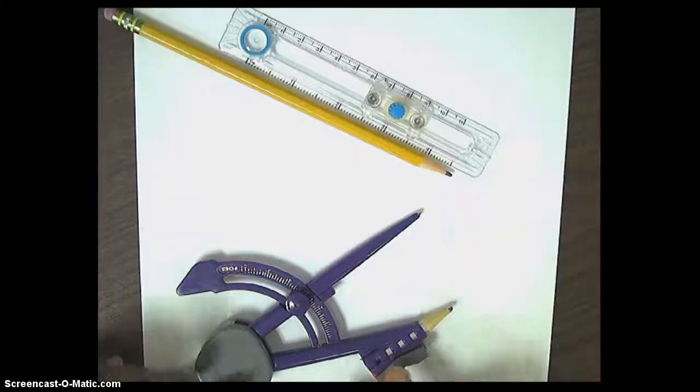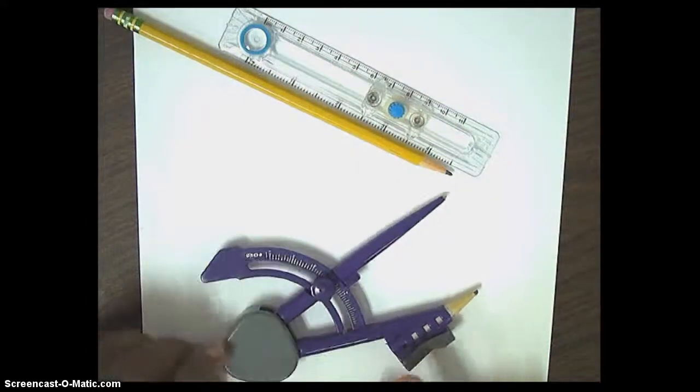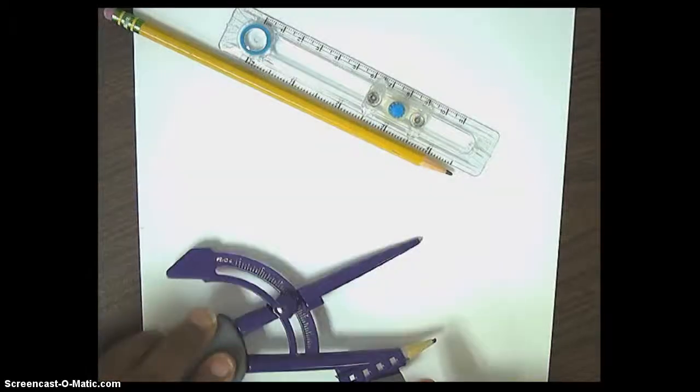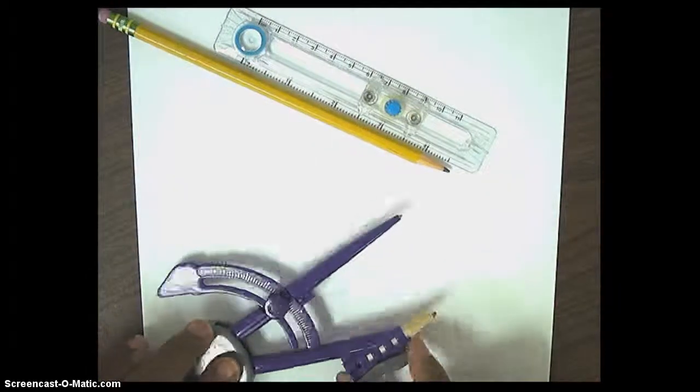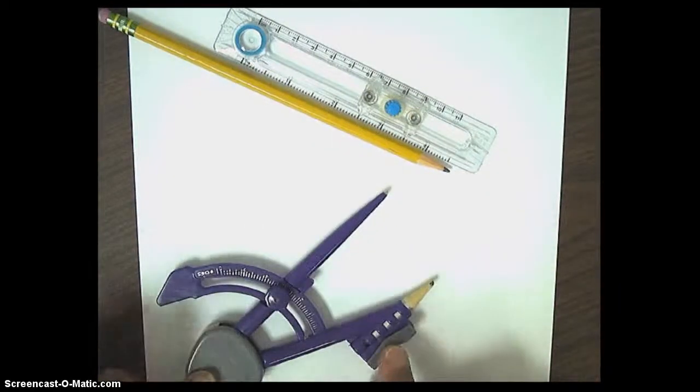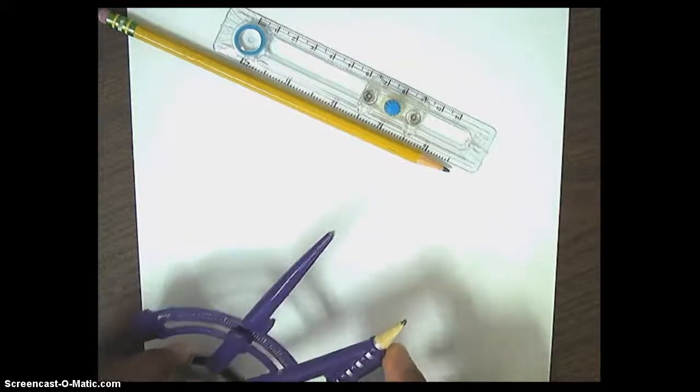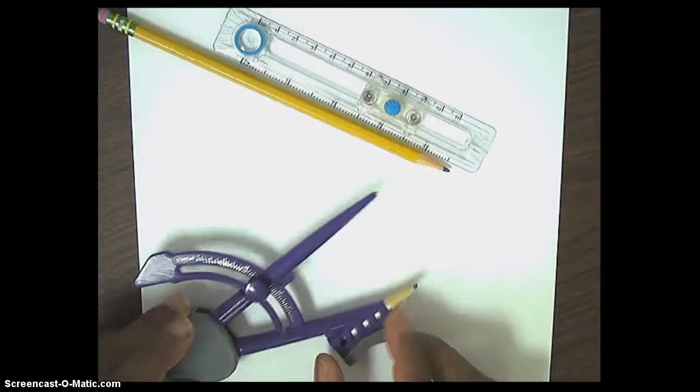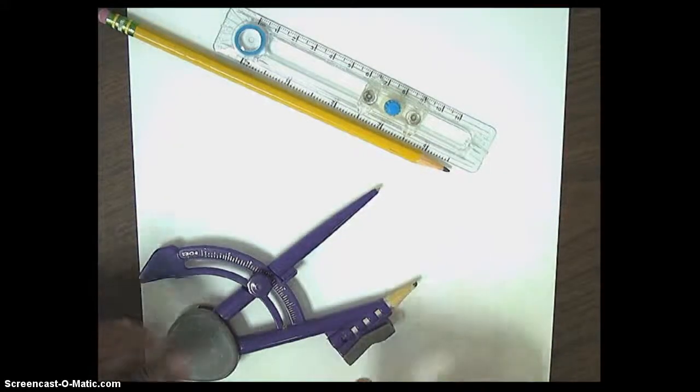And then you also have your typical type of compass, which is a drafting compass, and it has an anchor and a small little pencil. It could be a regular-sized pencil, but normally it's a small pencil, also with a good sharpened edge.